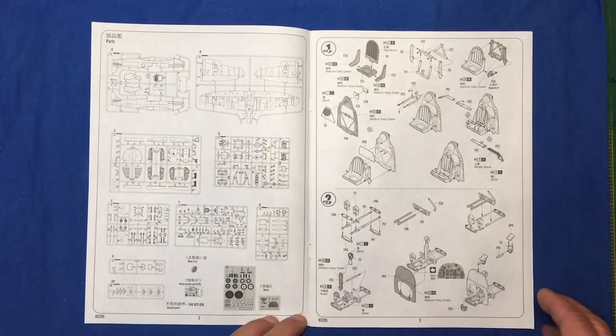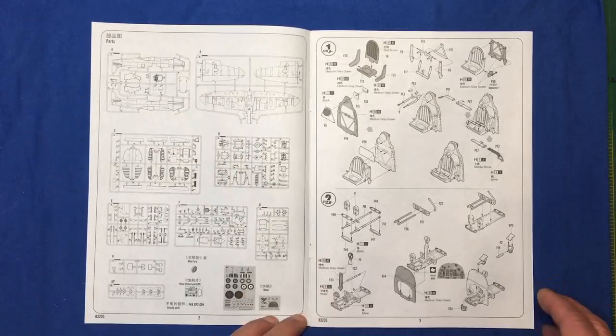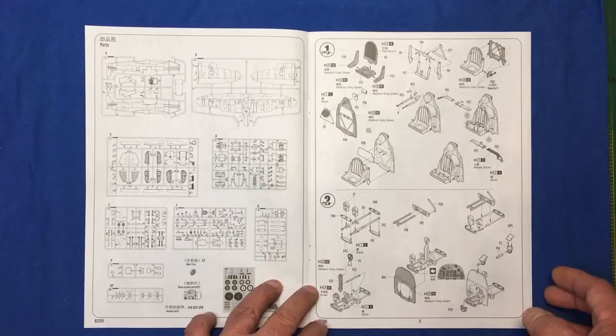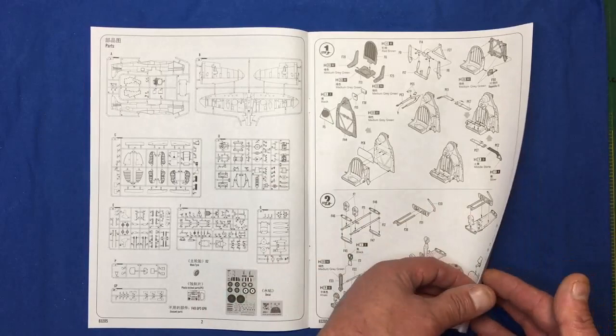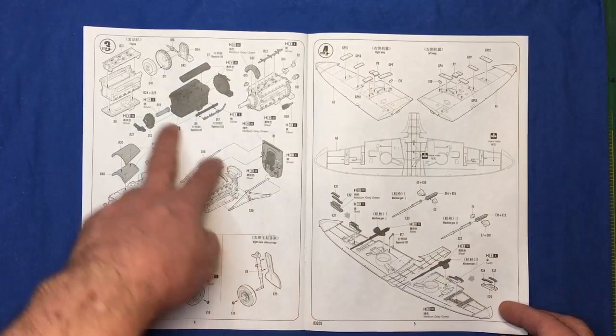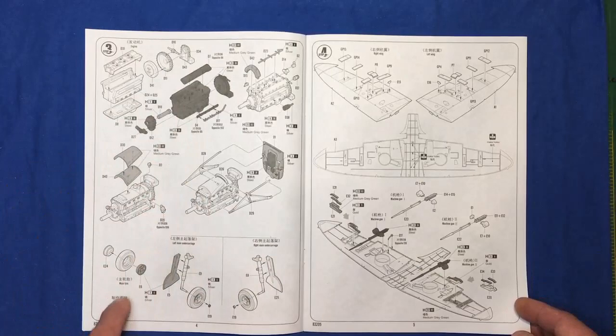Then we're going into the assembly of the cockpit. I see they're telling us to paint the seat green - I think you'll find that's supposed to be red, so I'll have to do some research on that. Cockpit's going together, it's quite nice. It's not as detailed as the Tamiya kit, but for a third of the price who's complaining? We've got a full engine going together there. I must admit it doesn't look much like a Merlin to me, but let's see.